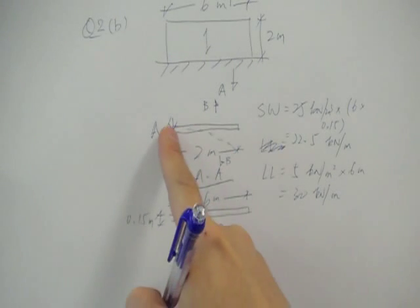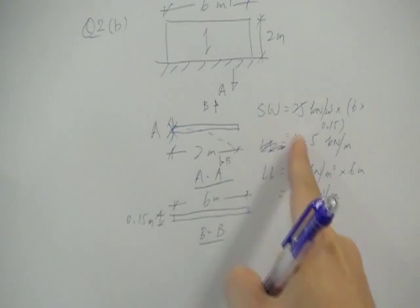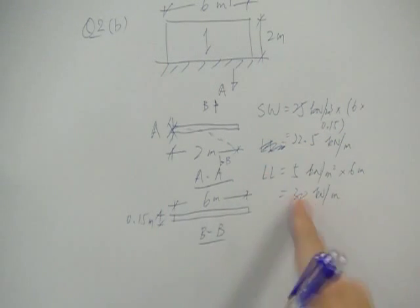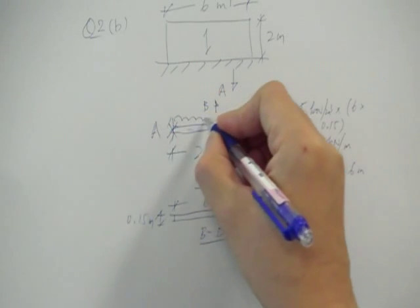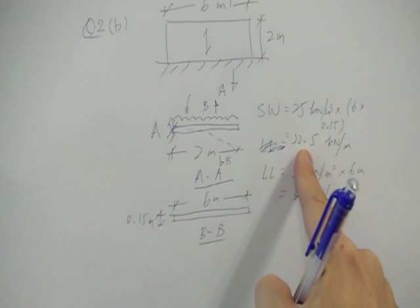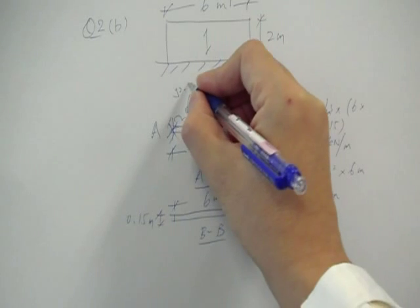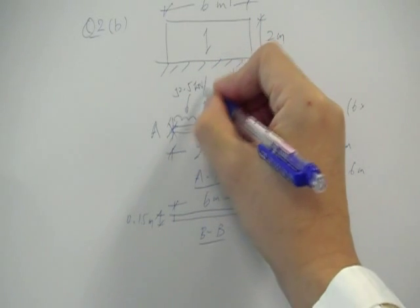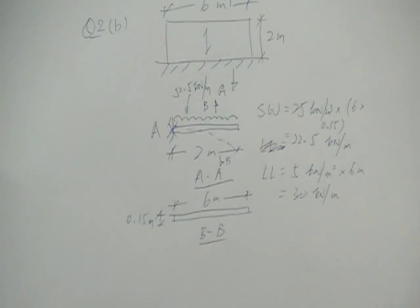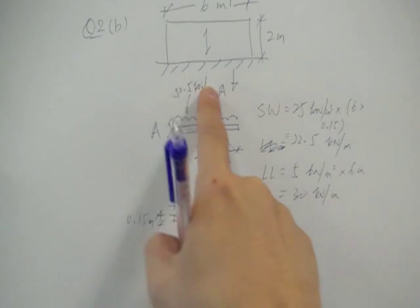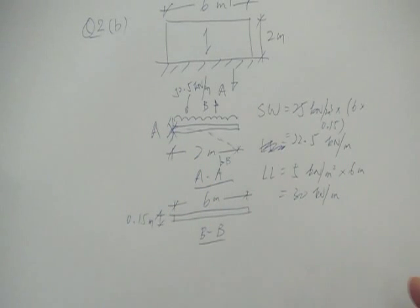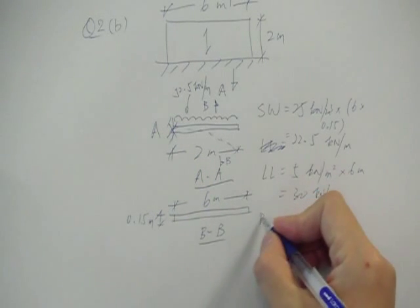So to calculate the bending moment A, now you know that the self weight is 22.5 kilonewton per meter. Live load is 30. That means on the top of this, you have a total of 30 plus 22.5. So that's 52.5 kilonewton per meter. Of course this is a UDL acting on the top of the beam. So with that UDL, you can easily find out the bending moment at point A, which I just write it down here.